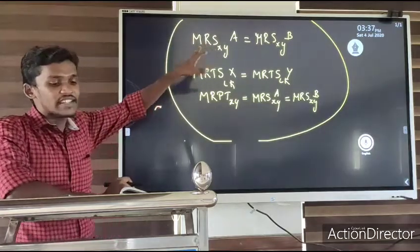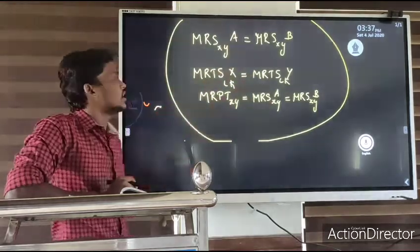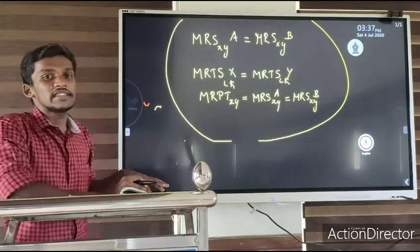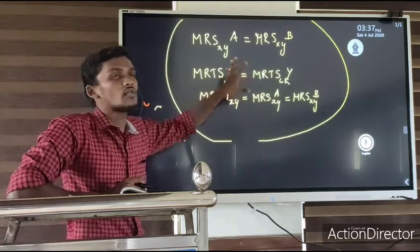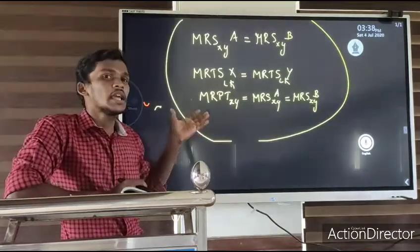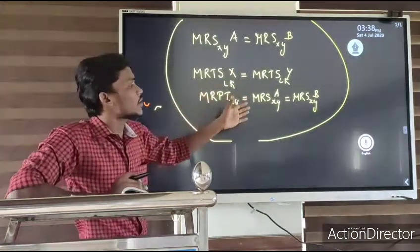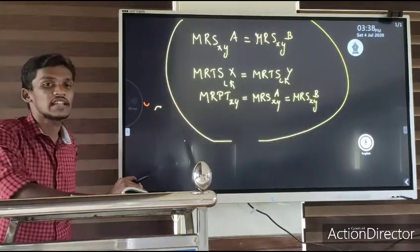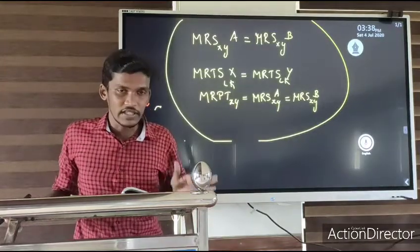So the three conditions for economic efficiency are: first, efficiency in the distribution of products among consumers — the marginal rate of substitution of X for Y must be equal for different consumers. Second, efficiency in the allocation of inputs — the marginal rate of technical substitution of commodity X must equal that of commodity Y. Third, the marginal rate of product transformation must equal the marginal rate of substitution of X for Y for consumers A and B.